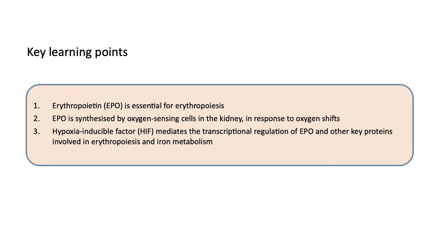The key learning points from this short video are: first, erythropoietin is essential for erythropoiesis; second, erythropoietin is synthesized by the oxygen-sensing cells in the kidney in response to oxygen shifts within its microenvironment; and third, the important role of the hypoxia-inducible factor in mediating the transcriptional regulation of erythropoietin and other key proteins involved in erythropoiesis and iron metabolism. Thank you.